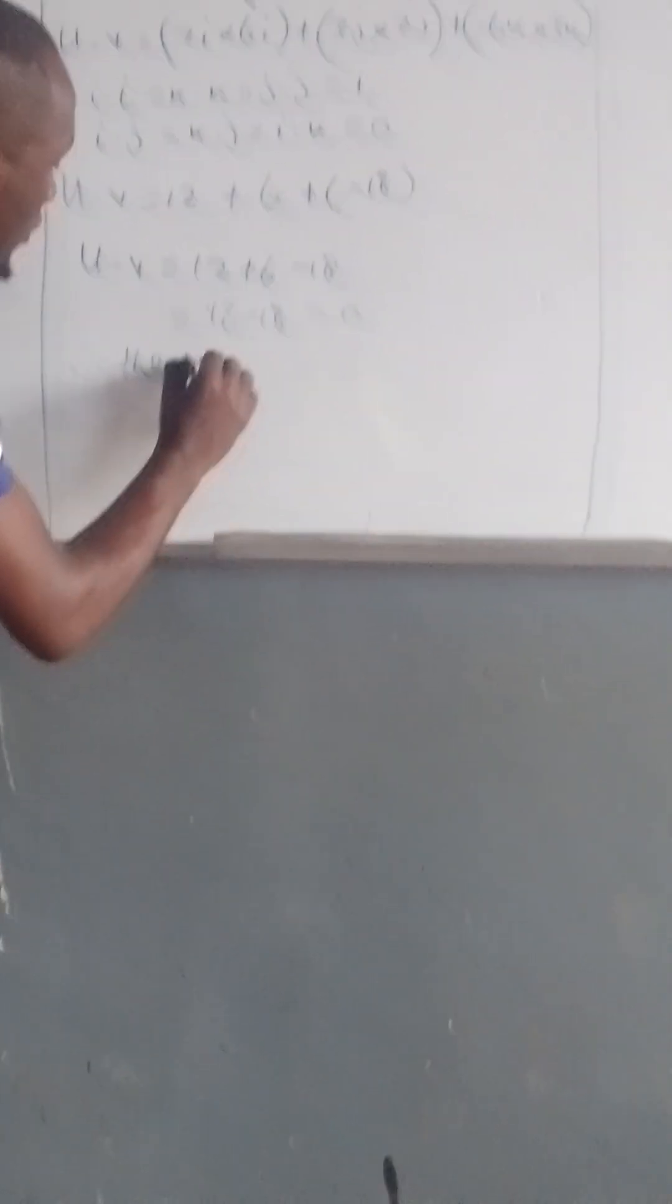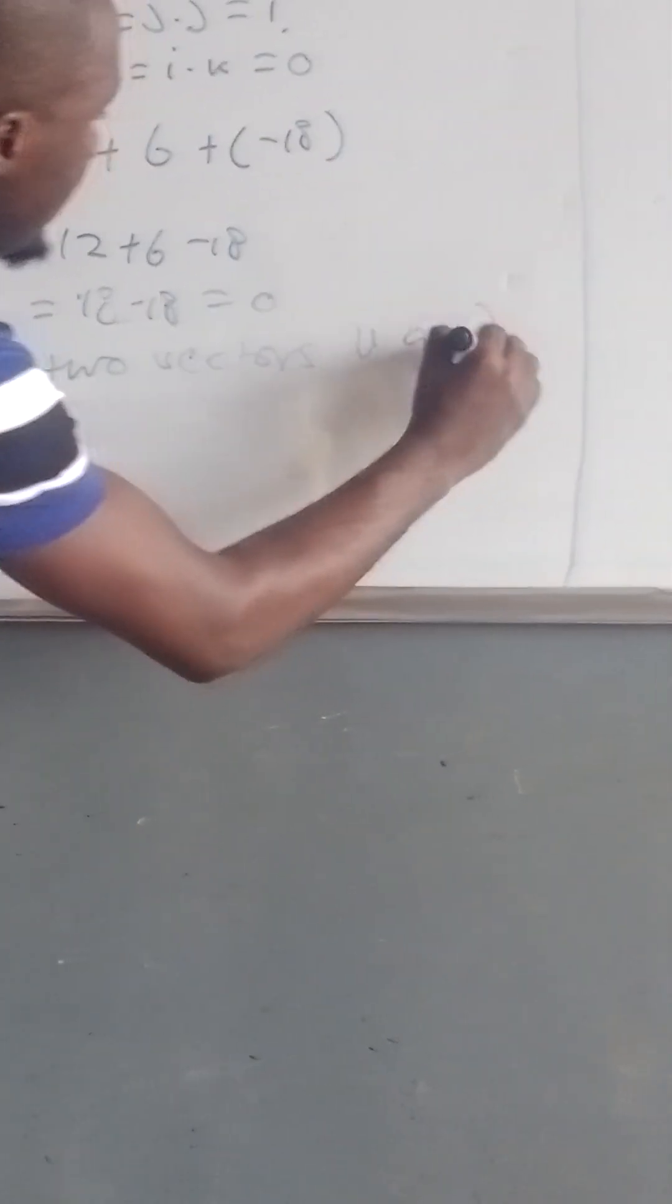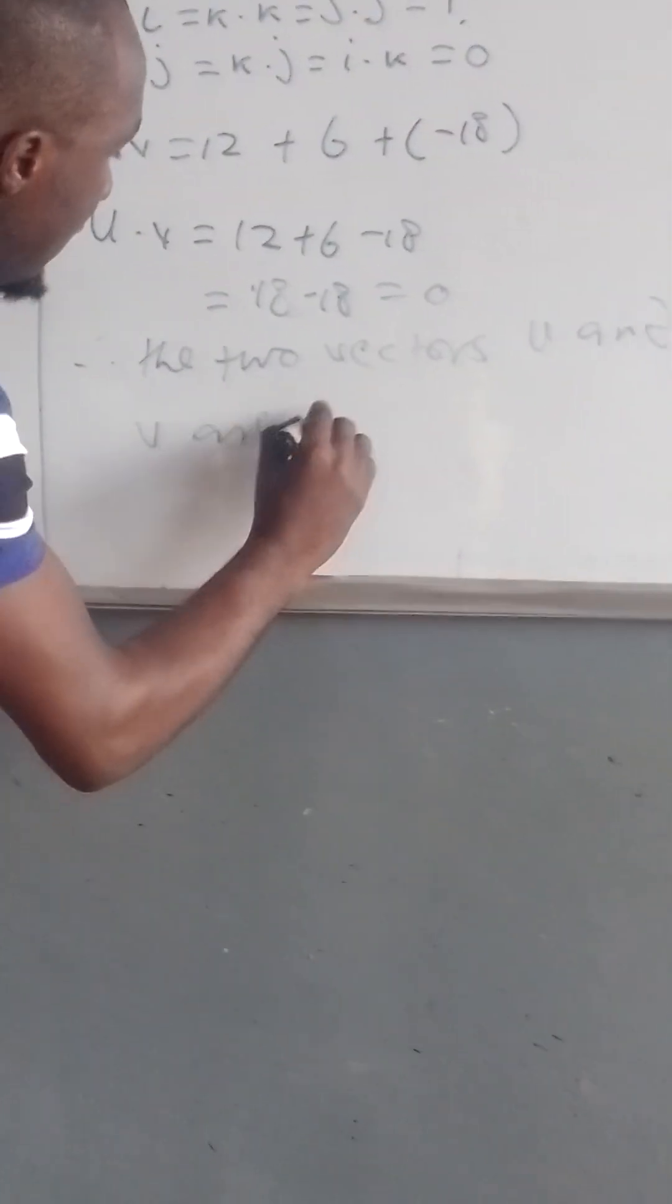Therefore, these vectors u and v are perpendicular.